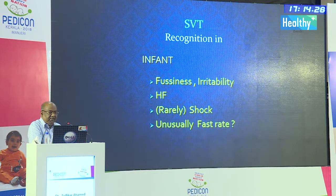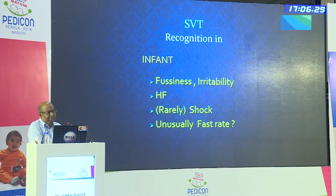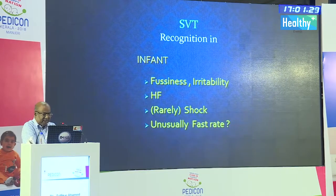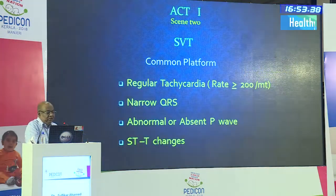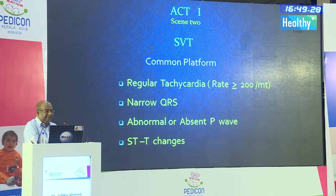Recognition of SVT in an infant: fussiness, irritability, frank heart failure, rarely shock, and an unusually fast rate picked up on routine examination — sometimes even during an immunization visit. The common platform for SVT: a regular tachycardia usually more than 200 per minute, a narrow QRS tachycardia, an abnormal or absent P wave, and ST-T changes in at least 50% of cases. Rate varies with age — in a newborn it can reach 300; in an infant, 220–280; in an older child, it can be as low as 180, but never less than 160 per minute.